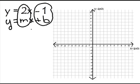Now to graph it, we always graph the y-intercept first. In this case, the y-intercept is negative 1. So I go over here to my y-axis, and I put a dot at negative 1.